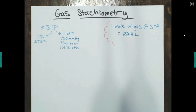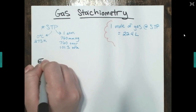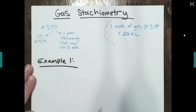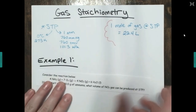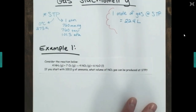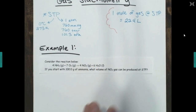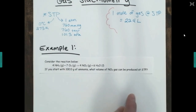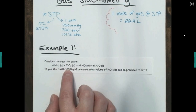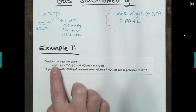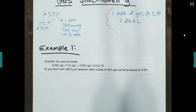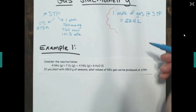Let's jump into our first example. Remember there are two examples — pay attention to both because they are different and both could show up on a quiz. Example one says: consider the reaction below. It gives you a balanced chemical equation, which is a dead giveaway that this is a stoichiometry problem. You start with 100 grams of ammonia (NH3) and the question asks: what volume of NO2 gas can be produced at STP?